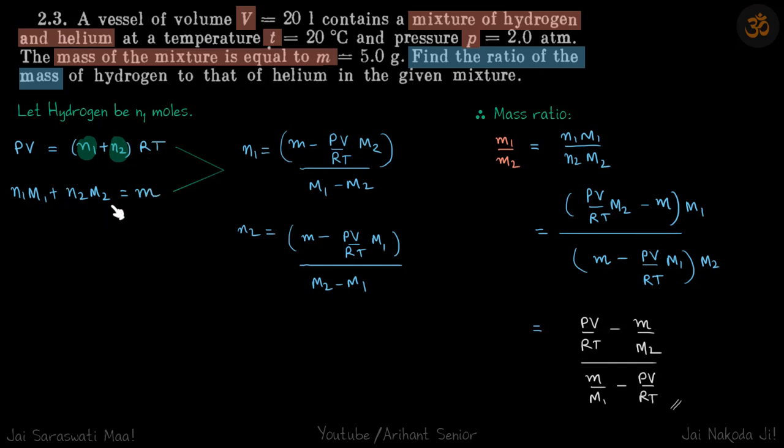Everything in these two equations is known except N1 and N2. So solving these two equations will get the value of N1 and N2. Now the mass ratio is N1 times M1 plus N2 times M2. We just do that and get our answer.